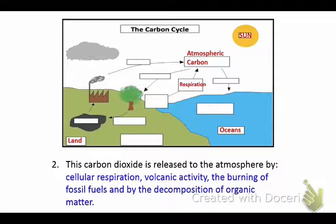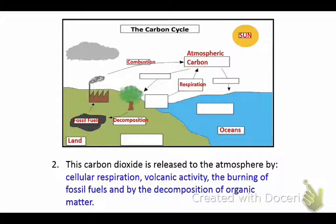We can see in the diagram that respiration is contributing to atmospheric carbon, along with fossil fuels being burned, combustion — even when you burn food at home — and decomposition as things die. All of these add atmospheric carbon, which comes in the form of carbon dioxide, one of the greenhouse gases we covered in the last unit.